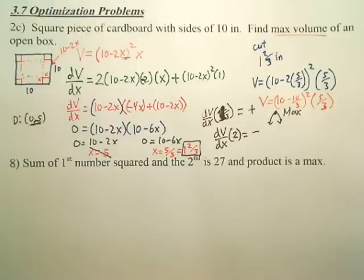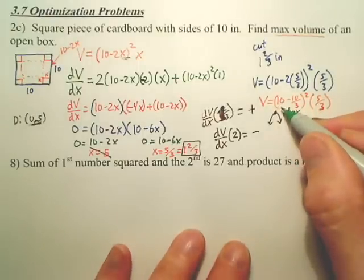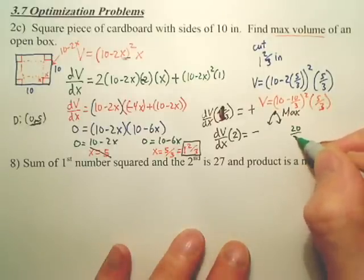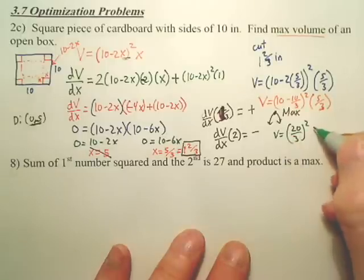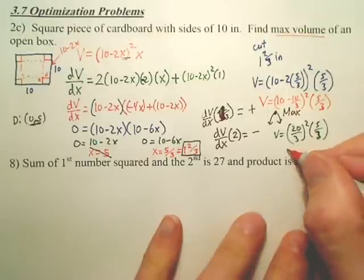And from there, let's just be 30 over 30. Correct? That would be 20 thirds squared times 5 thirds. Okay.